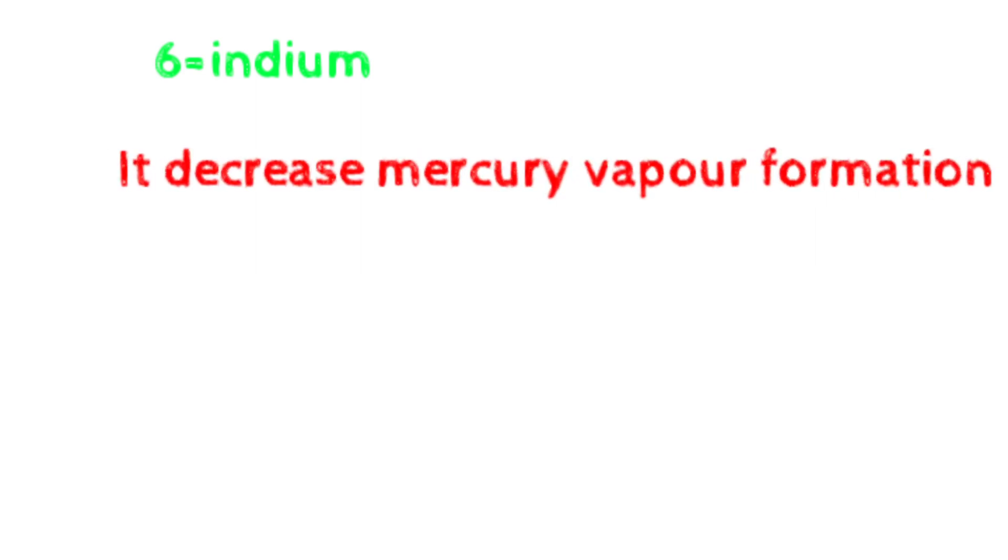Now come to the sixth, indium. Why do we use indium? Because it decreases mercury vapor formation, and mercury vapors are dangerous for the brain and for women, especially in pregnancy. Seventh is palladium. Palladium whitens the alloy, and second, palladium increases the hardness of amalgam.